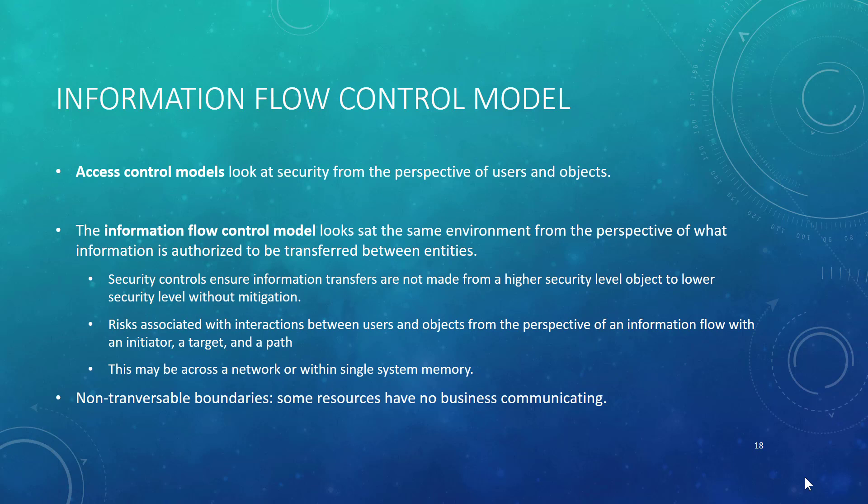As we've been talking about throughout the class, access control models look at security and risk from the perspective of users and objects. Users interact with objects, and that interaction has to be governed in such a way so as to protect the confidentiality, integrity, availability, and accountability of that information.